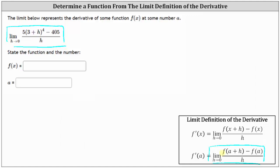Comparing the limits, notice how f of the quantity a plus h must equal five times the fourth power of three plus h, and also f of a must equal 405.